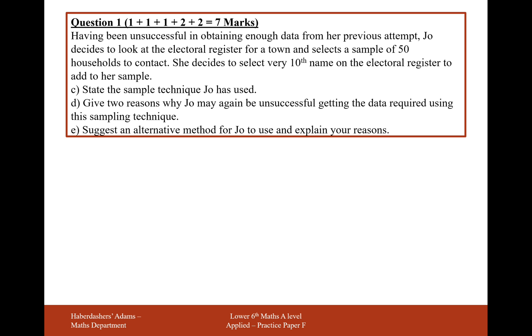Part E is suggest an alternative method for Joe to use and explain your reasons. So a random sample, as it avoids errors. Random sampling from people buying kitchen cleaners in a large store, as this would reduce the potential bias. There's always going to be some bias, but you're trying to reduce it as much as possible.